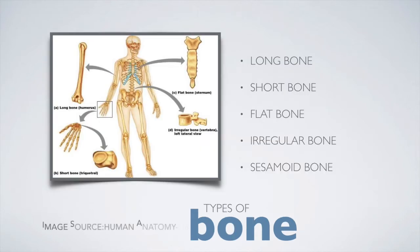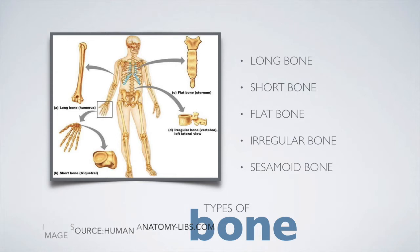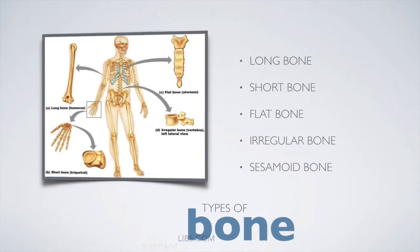Now let's have a look at the types of bone. There are five types of bone in the human body: long bone, short bone, flat bone, irregular bone, and sesamoid bone.